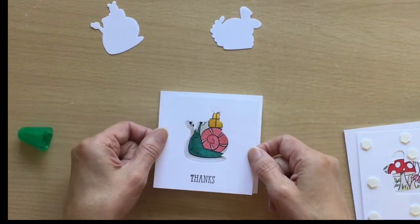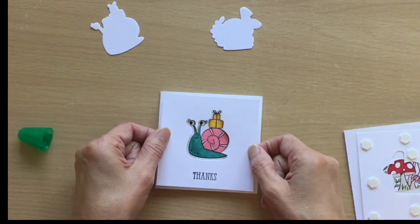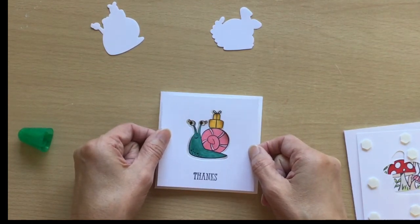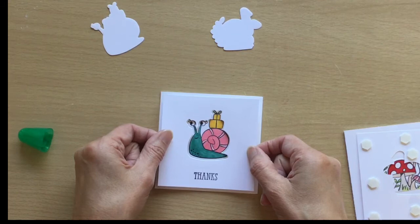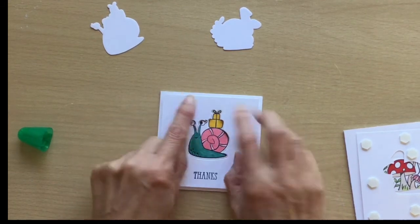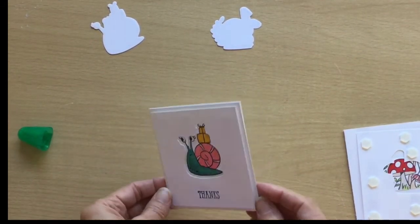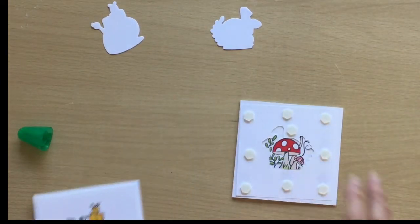Okay, and then we're going to flip that over and put some dimensionals on the back there as well. And then the tricky bit is putting this back over, so you want to line it up. I'm just hovering here with your image but make sure it's also straight. And there we go. Do the same with this one.